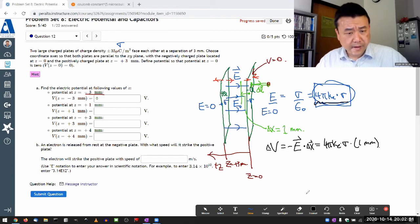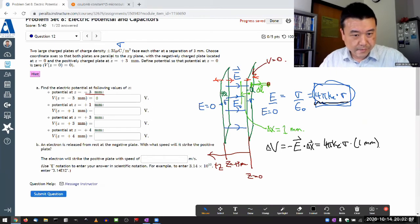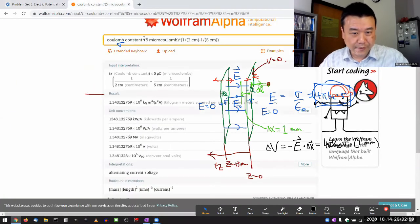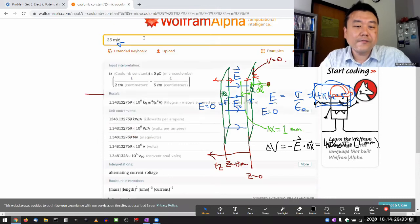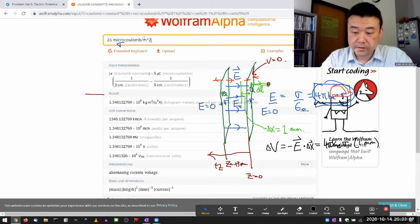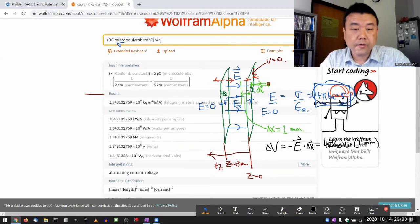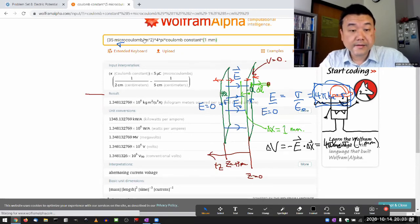Let me plug in the numbers for that. So 35 micro coulombs per meter squared is what I didn't remember. Let me just write that down first before anything else. 35 micro coulombs divided by meter squared, that's my surface charge density times 4 pi times coulombs constant. That gives me the electric field times one millimeter. That was the delta x.